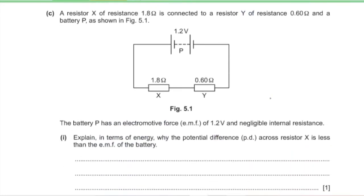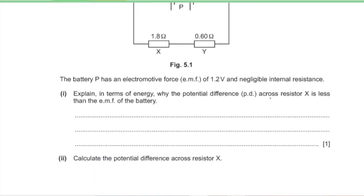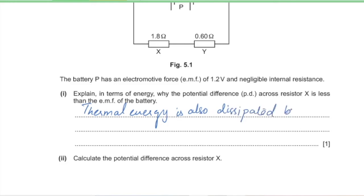Part C: resistor X (1.8 Ω) is connected in series with resistor Y (0.6 Ω) and battery P (EMF 1.2 V, negligible internal resistance). Part 1: explain why the potential difference across X is less than the EMF of the battery. In a series circuit, PD is shared across components. Resistor Y also dissipates thermal energy, so the PD across X is less than the total EMF.